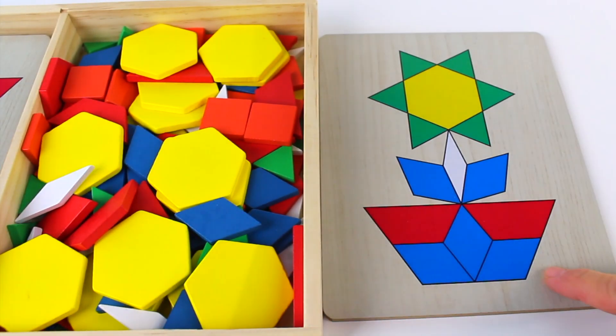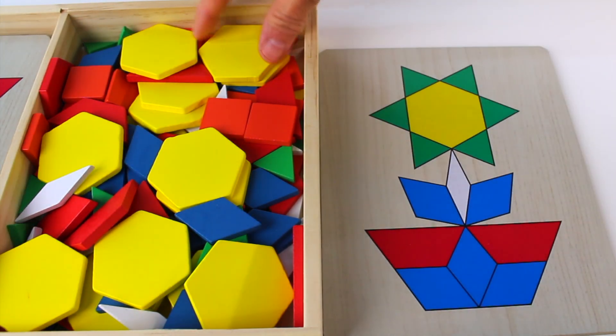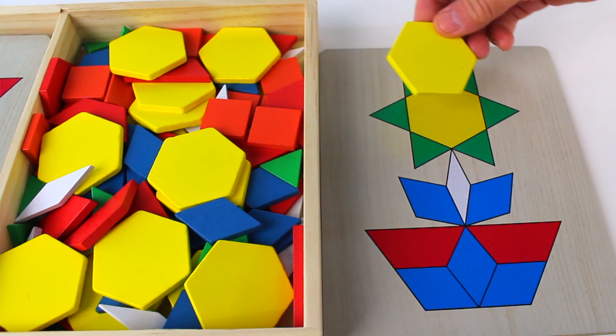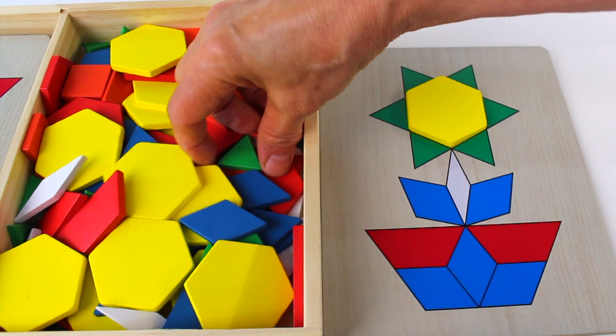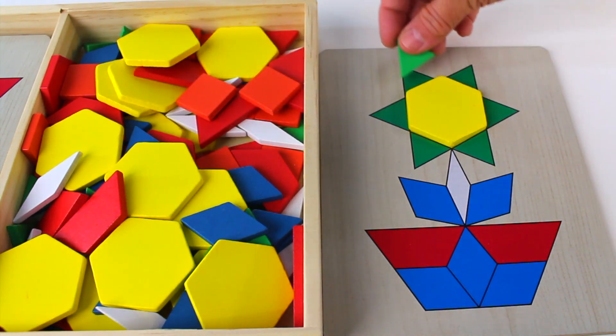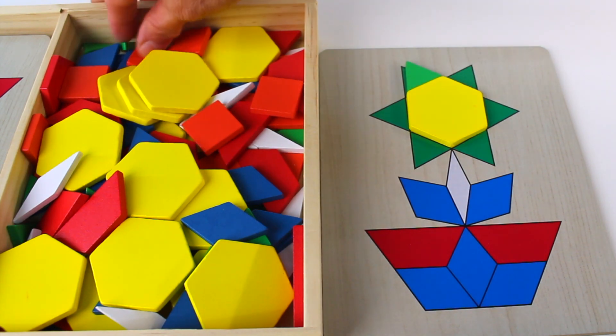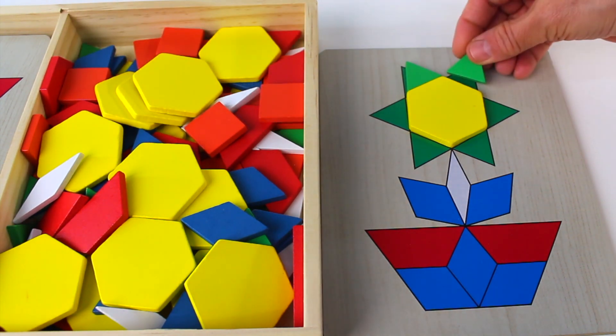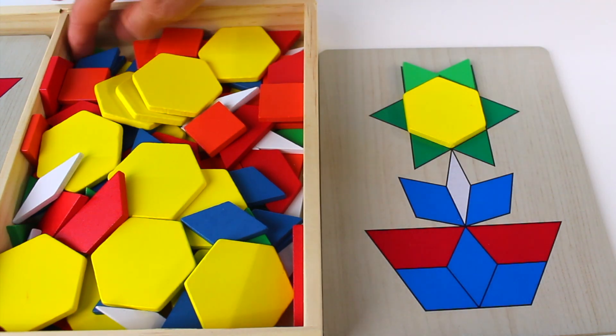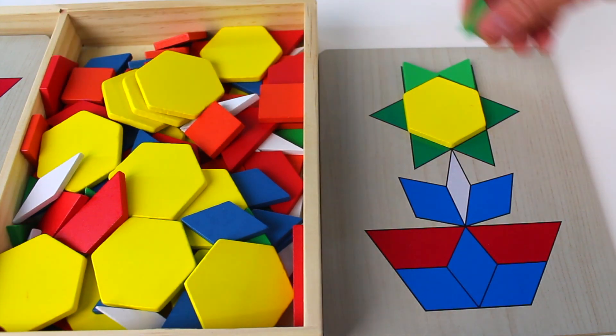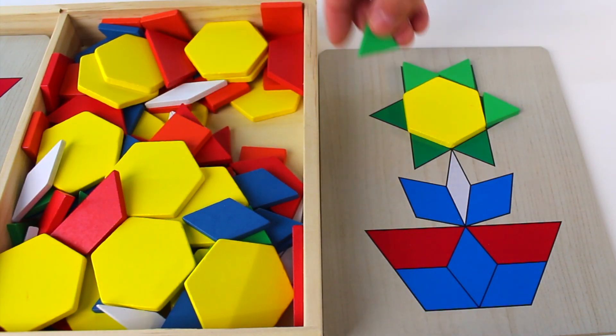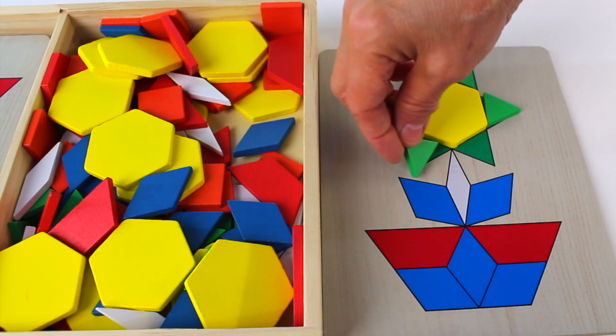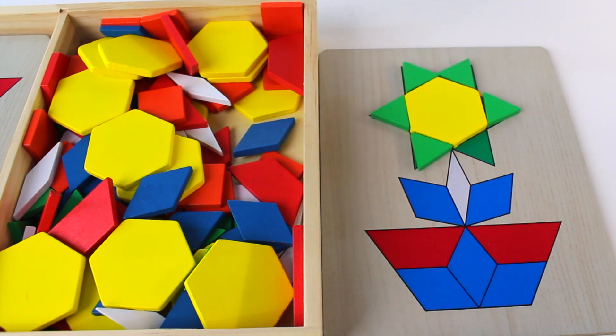This looks like a flower in a pot. Yellow hexagon, six sides. And look, we have green triangles: one, two, three, four, five, six.